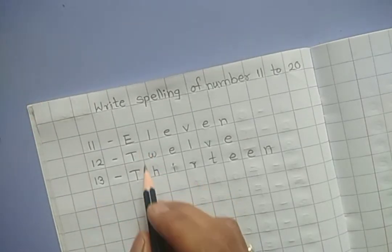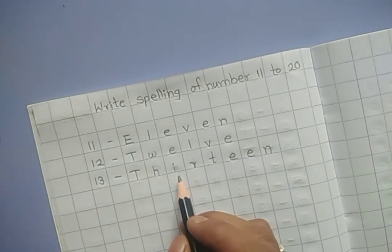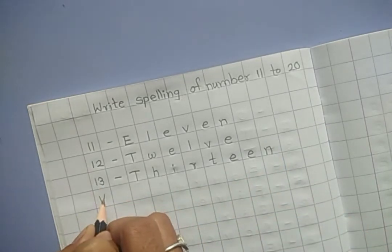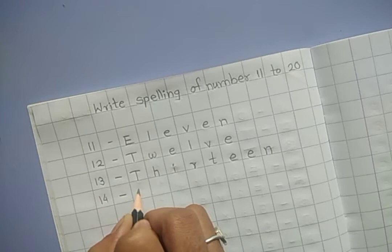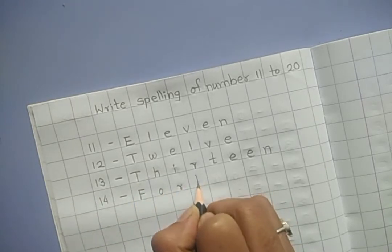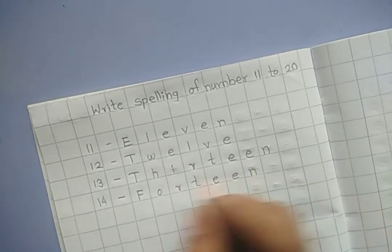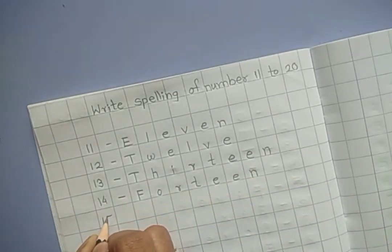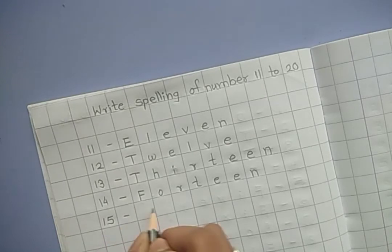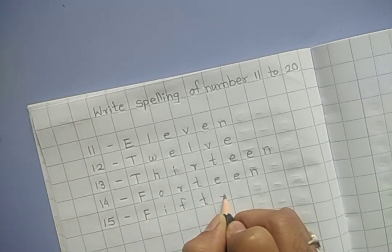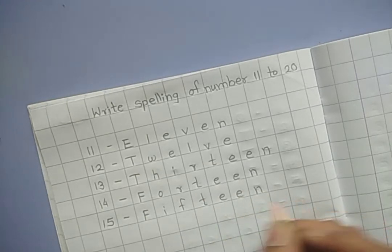First letter of each spelling should be capital and others should be small. 14, F-O-R-T-E-E-N, fourteen. 15, F-I-F-T-E-E-N, fifteen.